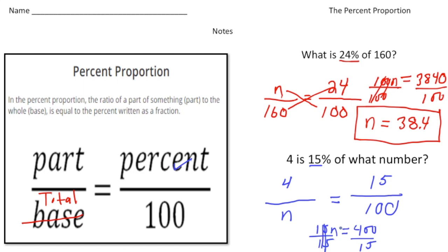400 divided by 15 gives us an answer of 26 and two-thirds, and there's your answer. So 4 is 15% of 26 and two-thirds. So this is a proportion you really need to become familiar with—it allows you to really solve a wide variety of percent problems.